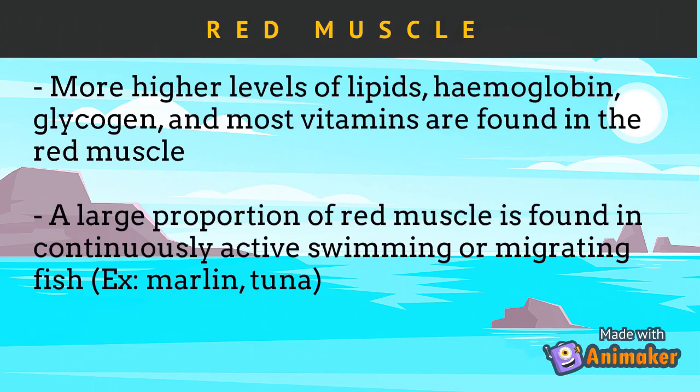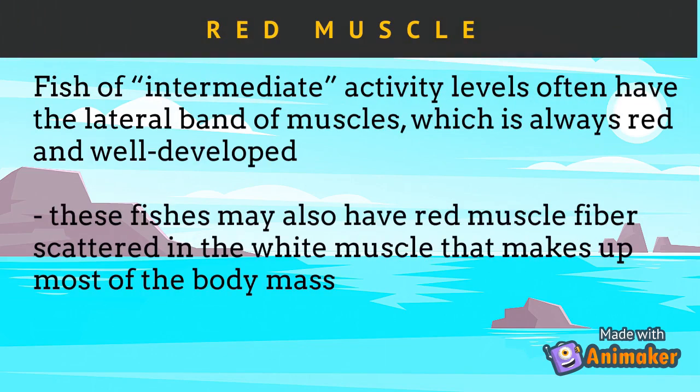Higher levels of lipids, hemoglobin, glycogen, and most vitamins are found in the red muscle. A large proportion of red muscle is found in continuously active or migrating fish such as marlins and tunas. Fish of intermediate activity levels often have a lateral band of muscles which is always red and well developed. These fish may also have red muscle fibers scattered in the white muscle that makes up most of the body mass.